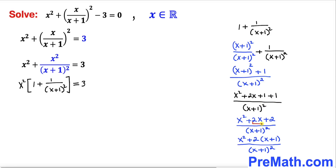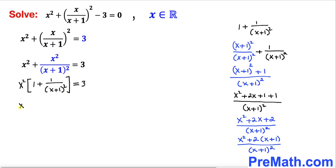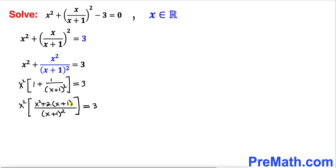In the numerator, 2x + 2 has a common factor of 2, so we factor out 2 to get 2 times (x+1). Replacing the bracket with this simplified form, we have x² times [x² + 2(x+1)] all divided by (x+1)², equals 3.